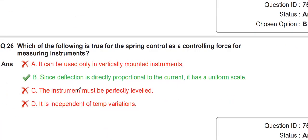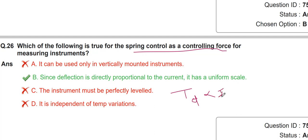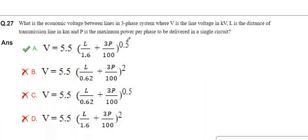This is the spring control controlling force for the measuring instrument. The deflecting torque Td is proportional to the current — it has a uniform scale. You have to remember this formula, as it is also used in the economic voltage formula in transmission lines.